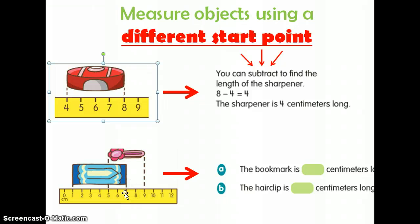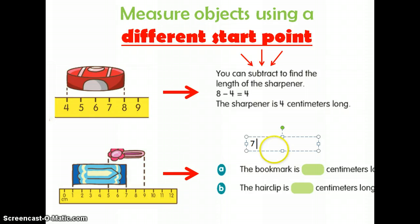So we would have to do a subtraction sentence. We would say seven, because it ends at seven. And then it began at one. So we would say seven minus one equals... And if you said six, you're correct. So the bookmark here actually measures six centimeters, not seven.